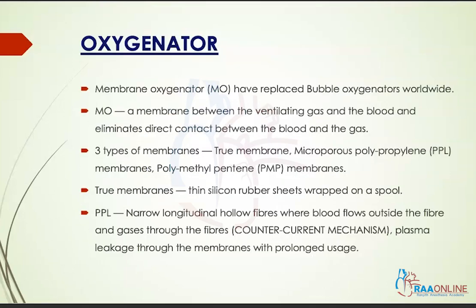Coming on to the first component, which is the oxygenator — worldwide, membrane oxygenators have replaced bubble oxygenators, so bubble oxygenators are not seen in most places, at least in developed countries. A membrane oxygenator consists of a membrane which separates the ventilating gas from the blood, thereby eliminating any direct contact between the blood and the gas interface. There are three types of membranes used: the true membrane, the microporous polypropylene membranes, and the polymethylpentane membranes.